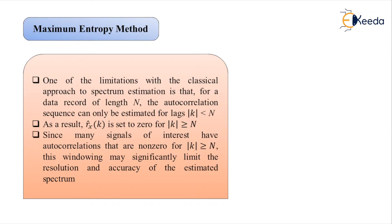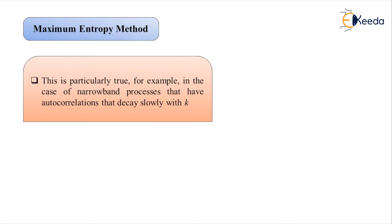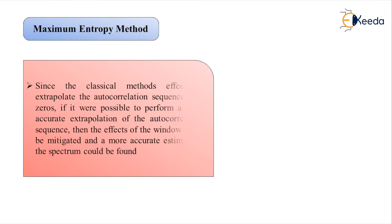This is found to be very true, and for example, in the case of narrow-band processes, the autocorrelations decay slowly with k. Since all classical methods are effectively extrapolating the autocorrelation sequence with zeros, if it were possible to perform a more accurate extrapolation, the effects of the window could be mitigated and a more accurate spectrum estimate obtained. This is the motivation for the maximum entropy method.